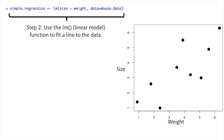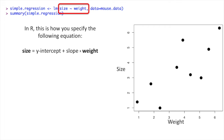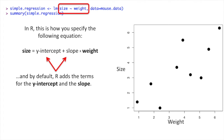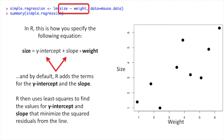Step 2: use the LM function, where LM stands for linear model, to fit a line to the data. In R, this is how you specify the following equation. We specify size is predicted by weight by using the tilde character between size and weight. By default, R adds the terms for the y-intercept and the slope. R then uses least squares to find the values for the y-intercept and the slope that minimize the squared residuals from the line.